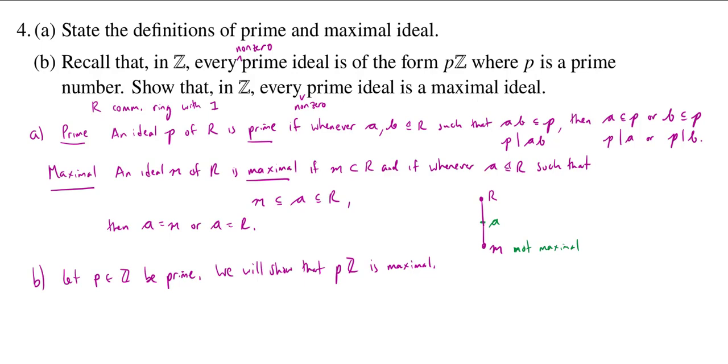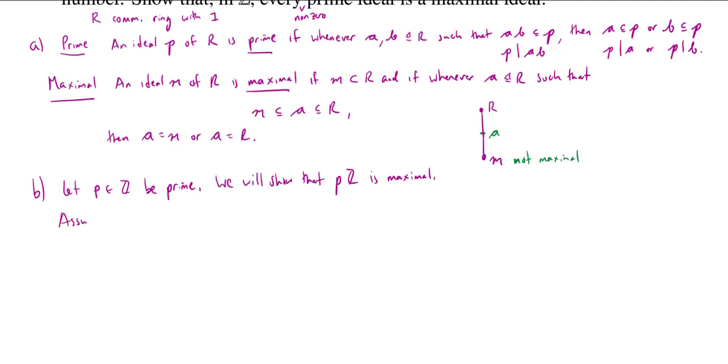And we will show that PZ is maximal. So to show that something is maximal, we assume that there is something in between, and then we're going to show that it's either the one beneath or the one above. So assume, well, I could say assume A is an ideal of Z, such that A contains P, or PZ. But I actually, again, know that every ideal in Z is principal.